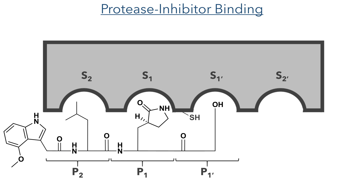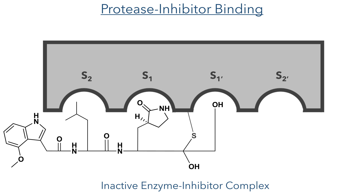So let's look at how this drug inhibits the enzyme. The hydroxyl group, lactam, and the alkyl side chain bind to subsites in the active site. This places the ketone in close proximity to the cysteine residue, which acts as a nucleophile to attack the carbonyl and form a thiohemiacetal complex, which can no longer function, and thus prevents further replication of the virus.